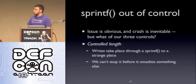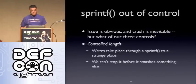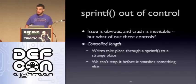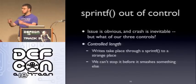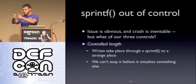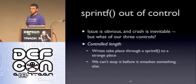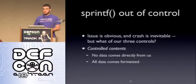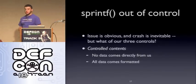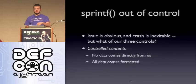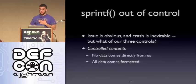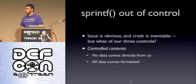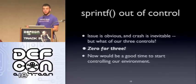Let's talk about the next issue — our three controls. The issue is obvious: a crash is inevitable. Control number two is the length. We know that writes take place through sprintf to a strange place, and we can't stop it. We don't determine how long it goes because sprintf is just a fixed-length format string. Even if the thing we want to smash is in the middle, it'll keep going off the end. Control number three: controlled contents. What are the contents of the buffer? In our elementary exploit, the contents were the letter A a bunch of times, some shellcode, and then a return address. But we don't control that — no data comes directly from us in this exploit. All of this data is formatted through sprintf. We're zero for three. How are we going to exploit this?